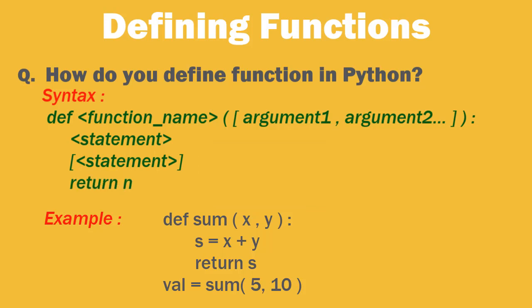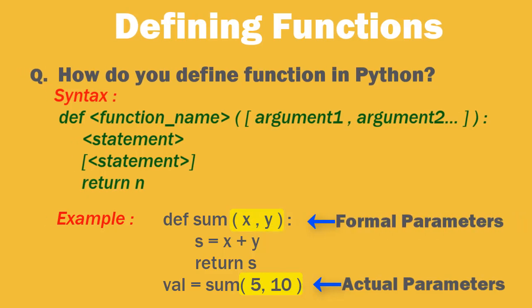To call a function, use the function name followed by parenthesis. When you call a function, the values passed as arguments are called as actual parameters. The values received in the function definition header are called as formal parameters.